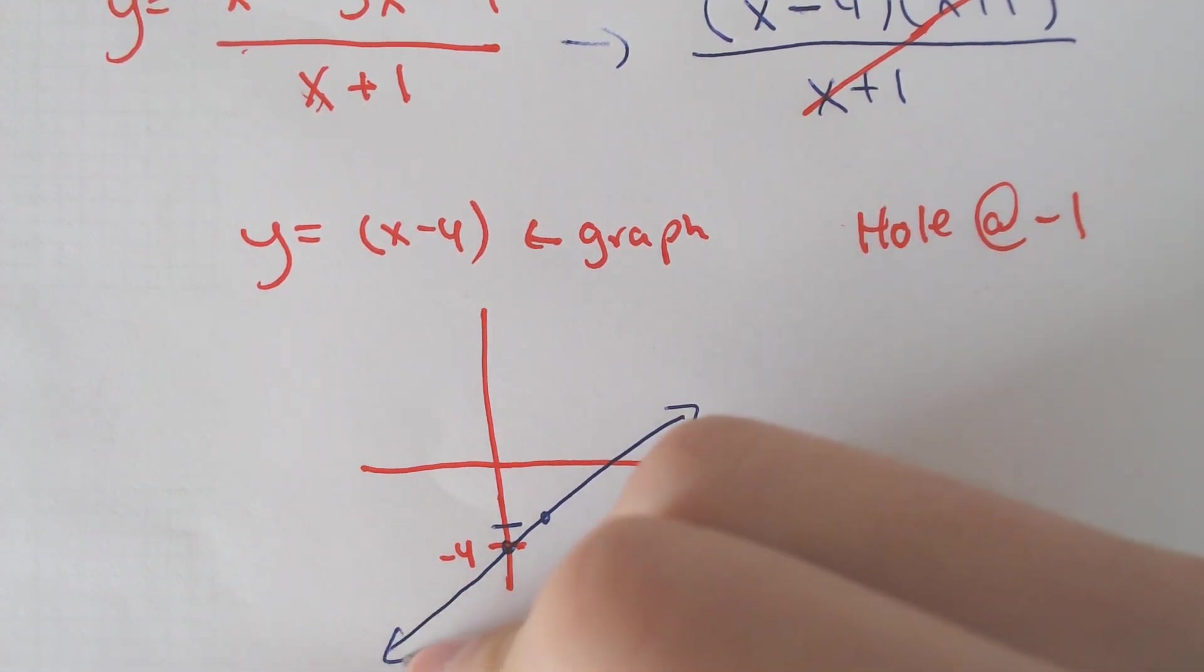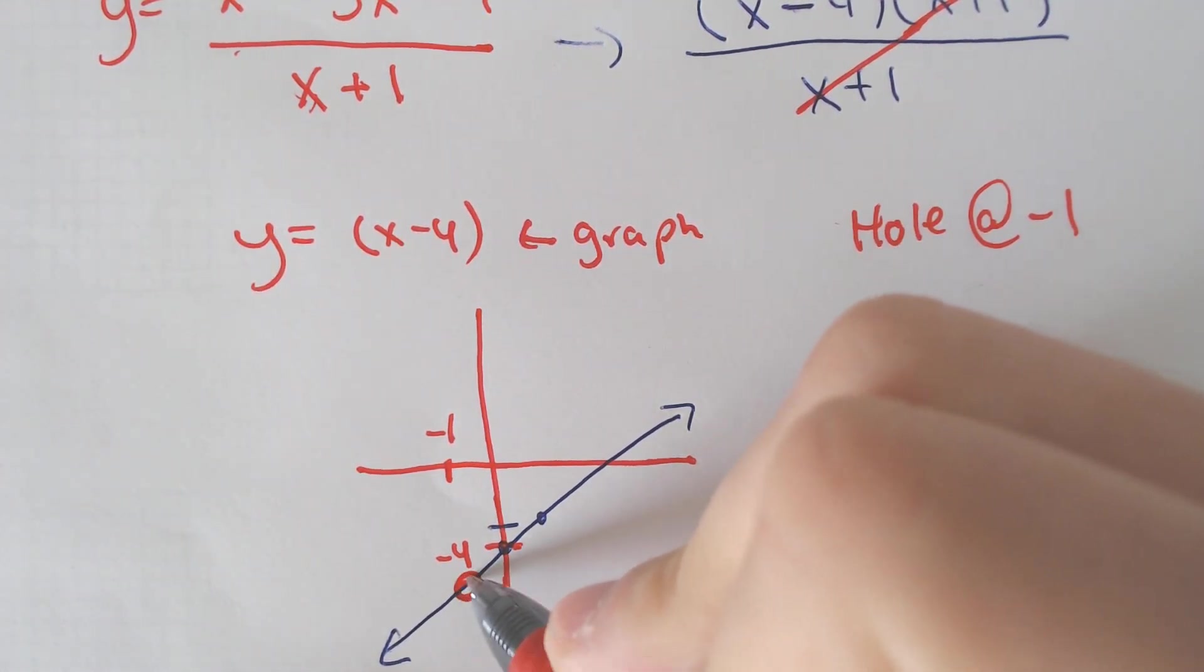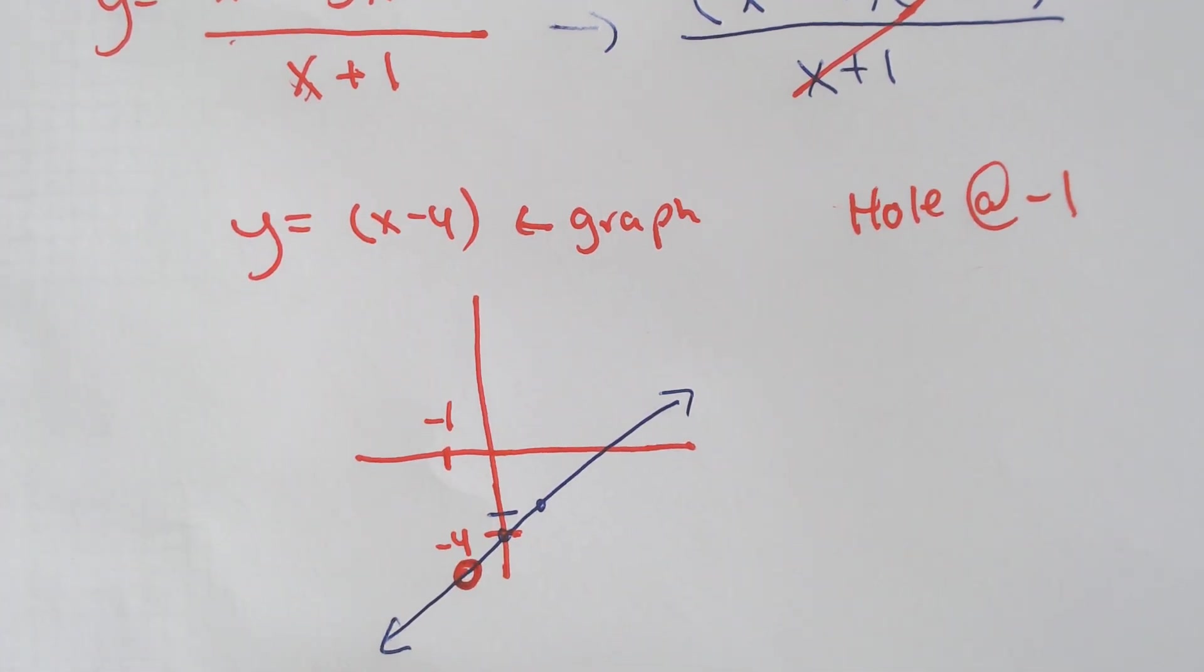The issue is that this line has a big gaping hole at negative 1. So when you have that negative 1 part on the line, you need to put a hole there.